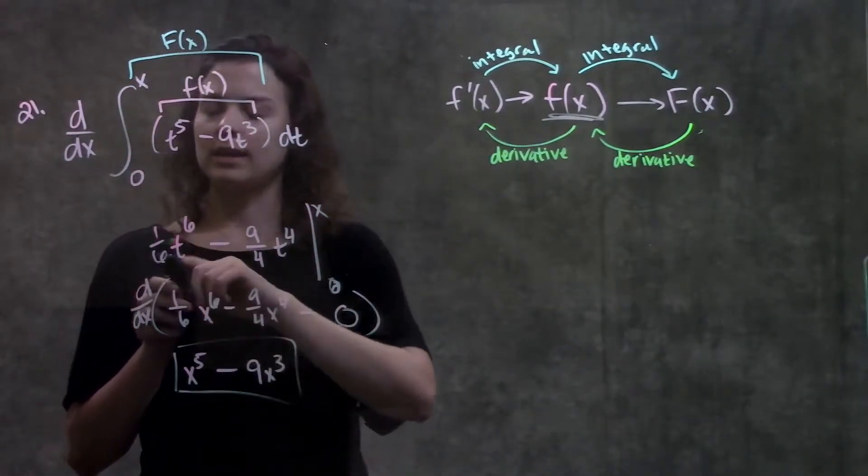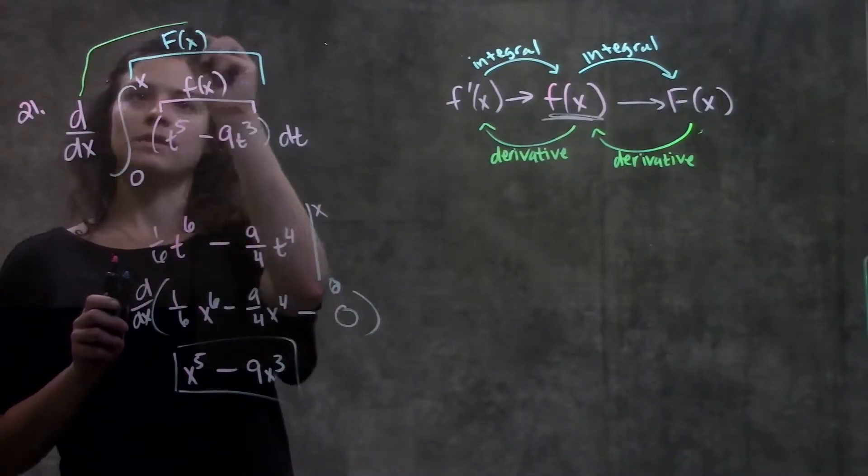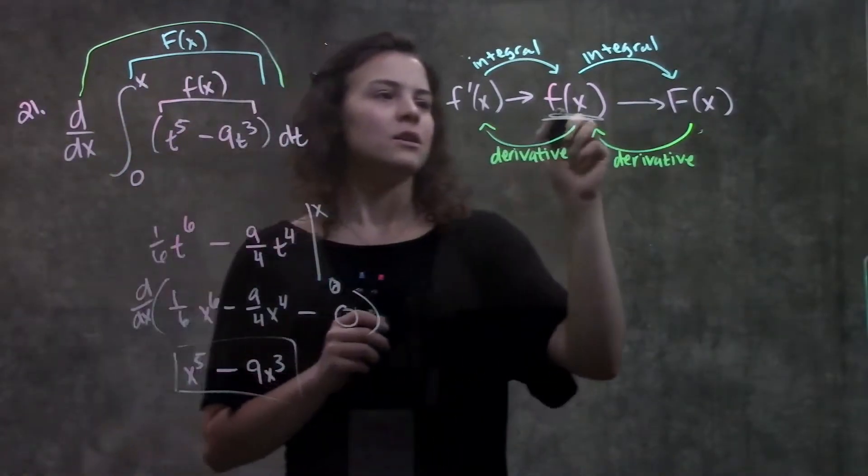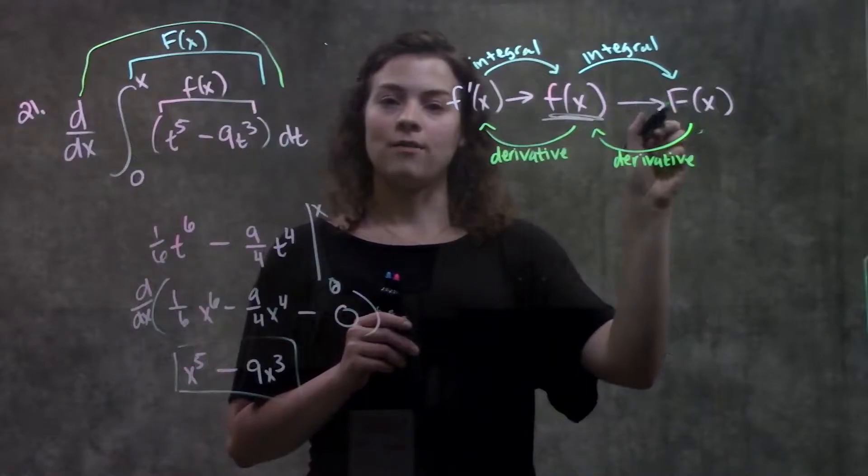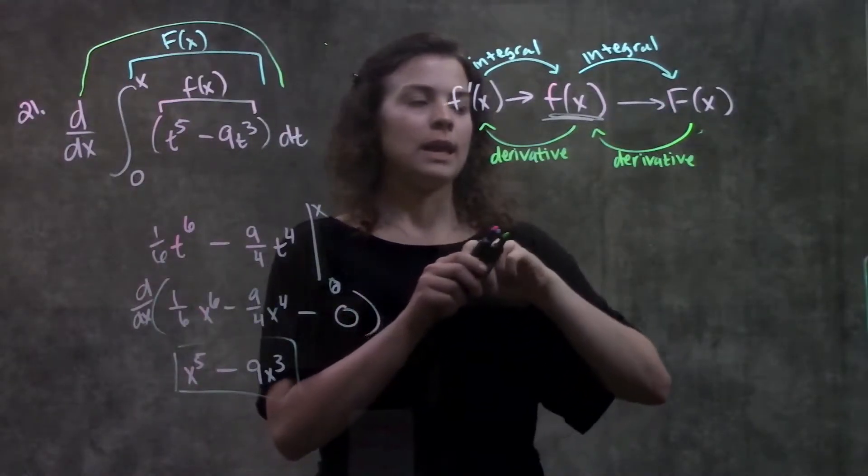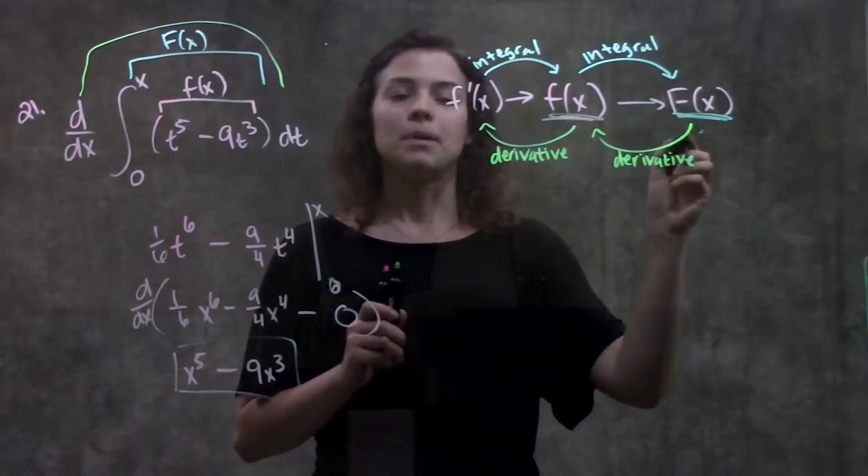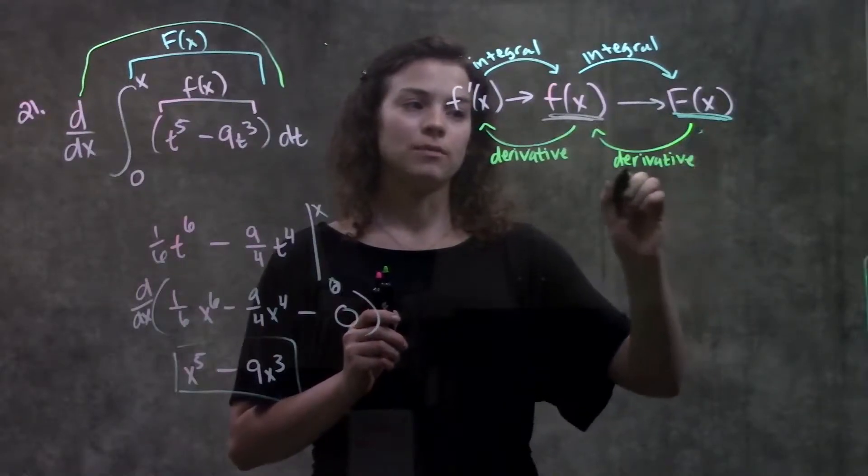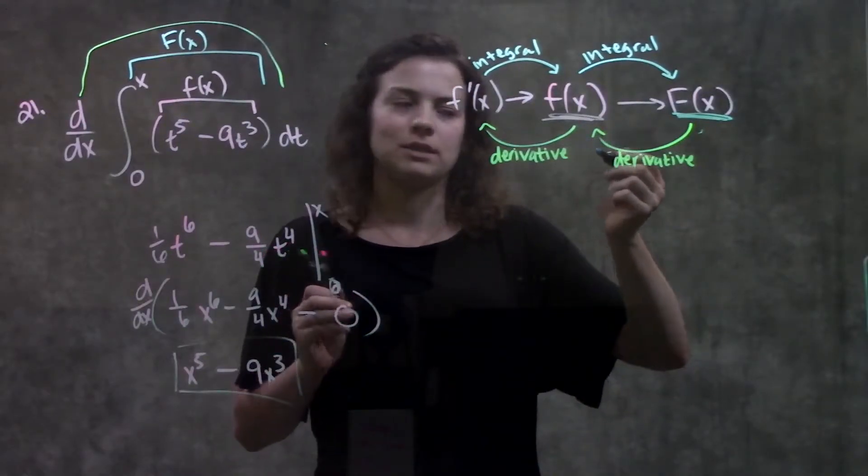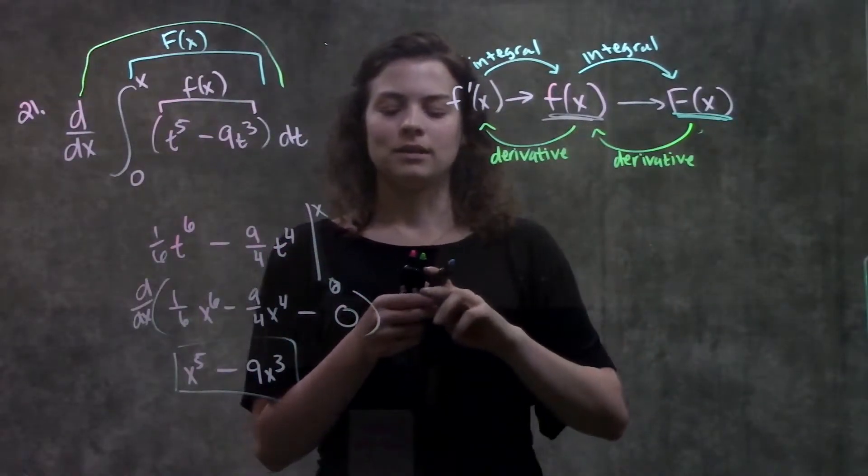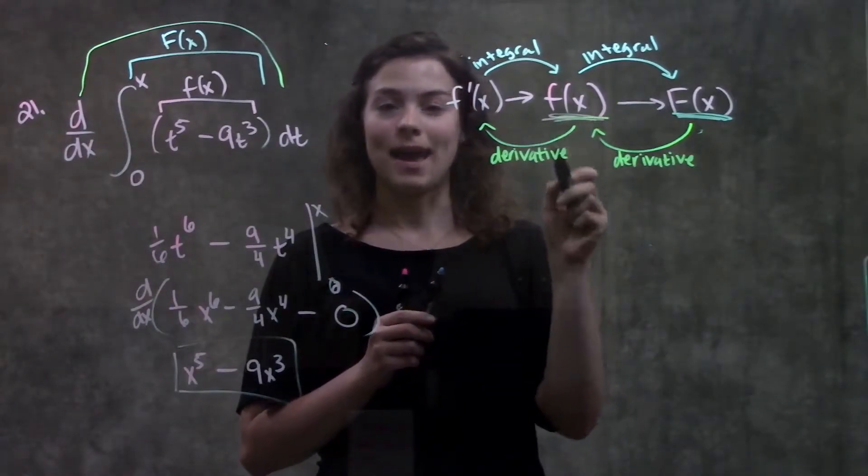Then this next thing is telling me to take the derivative of that. So, after I took the integral of f of x, I'm over here at big F of x. But now that it's asking me to take the derivative, I'm just undoing what I just did. Now I'm going back to my original function, f of x.